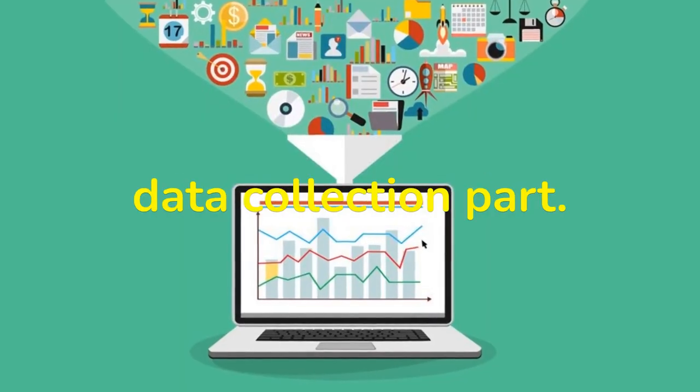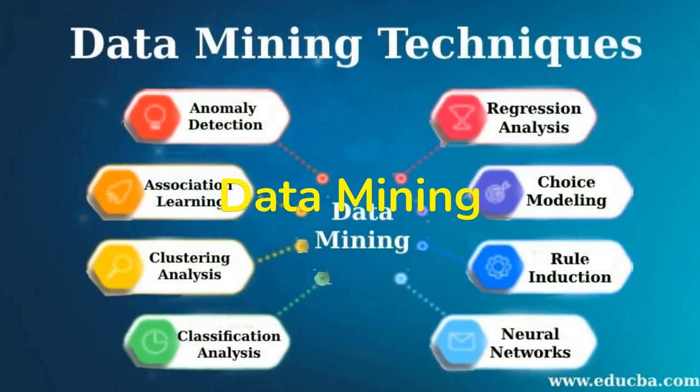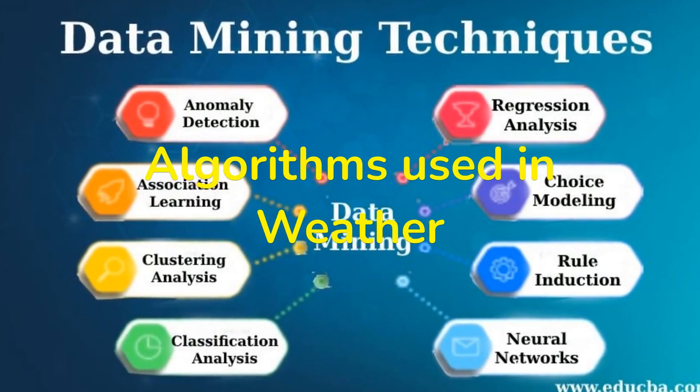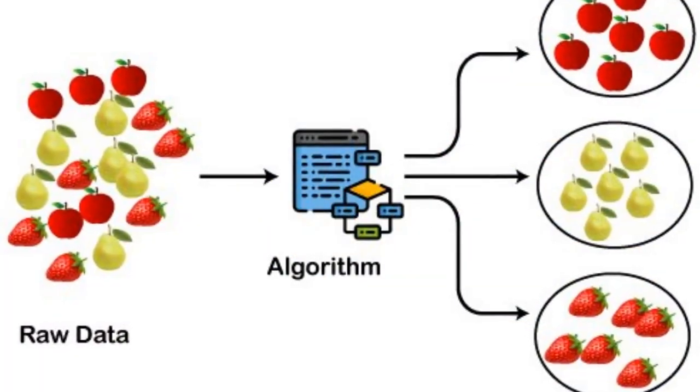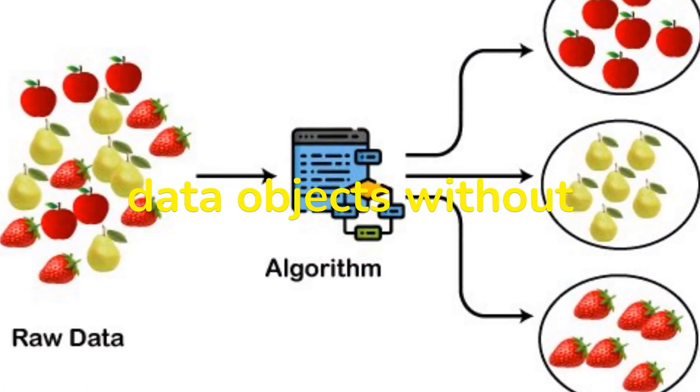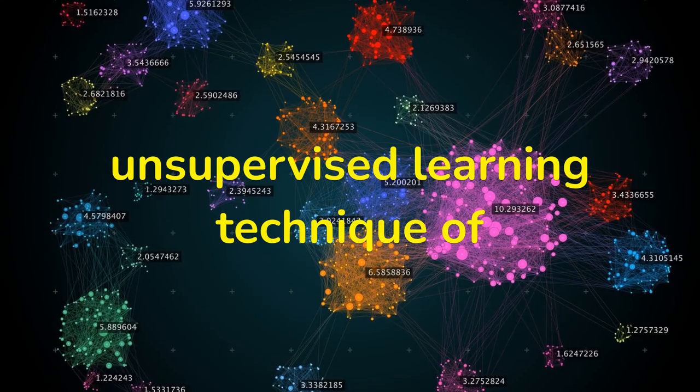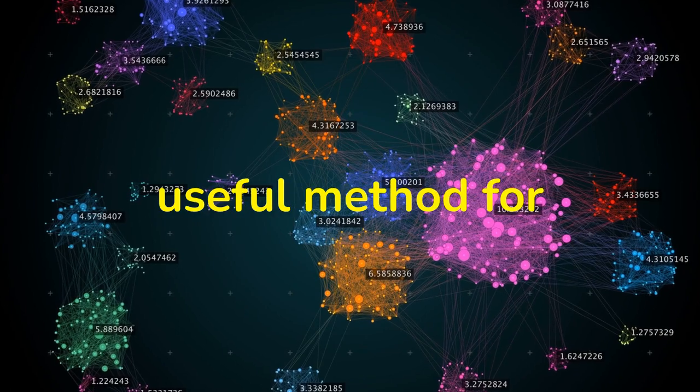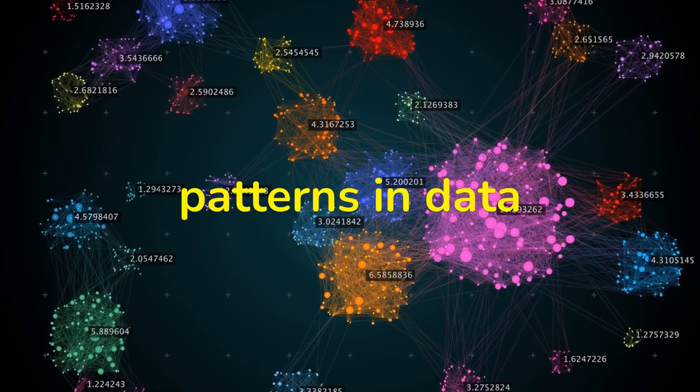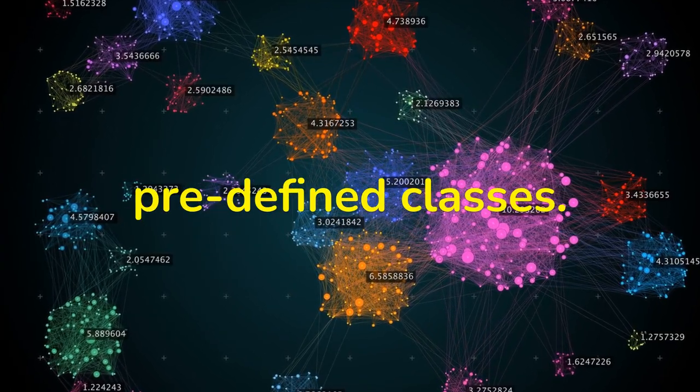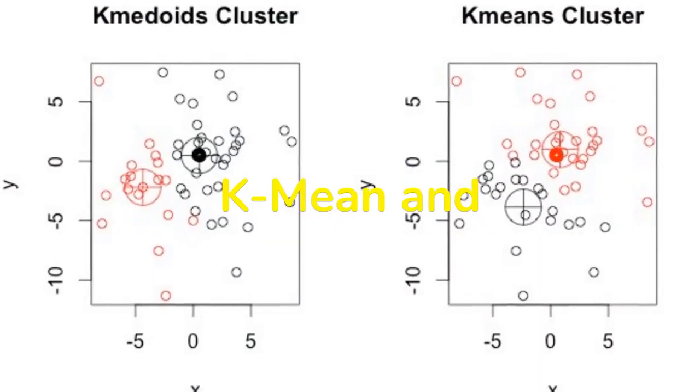Here we end the data collection part. Data mining techniques and algorithms used in weather forecasting: Clustering. Clustering analyzes data objects without consulting a known class label. The unsupervised learning technique of clustering is a useful method for ascertaining trends and patterns in data when there are no predefined classes. K-mean and K-medoids.